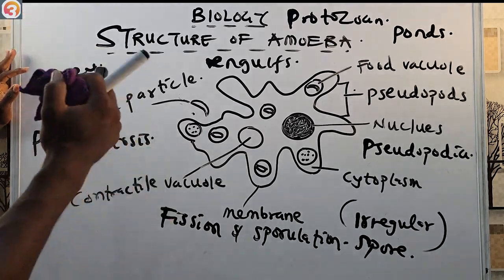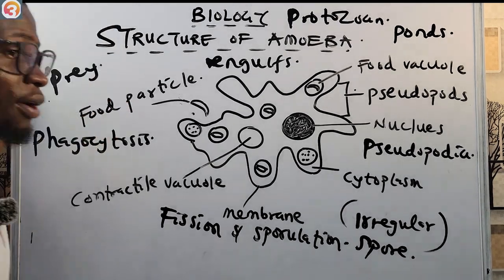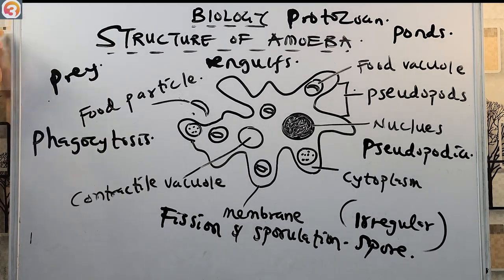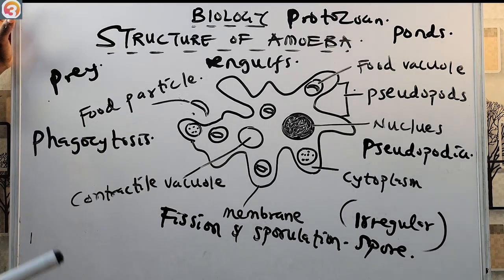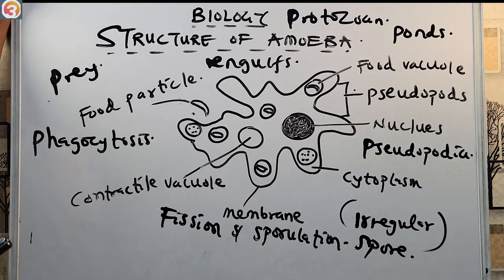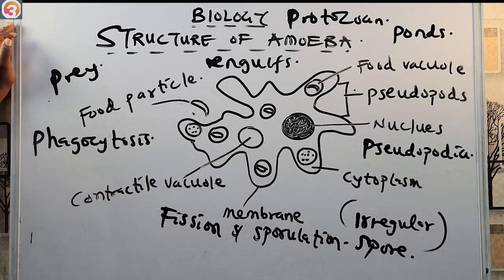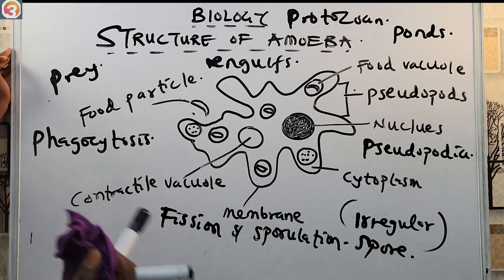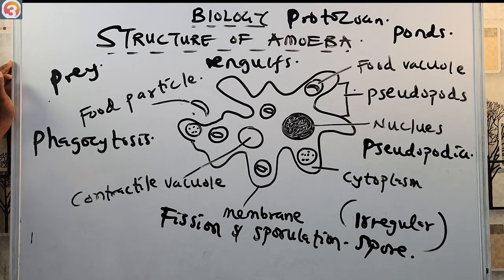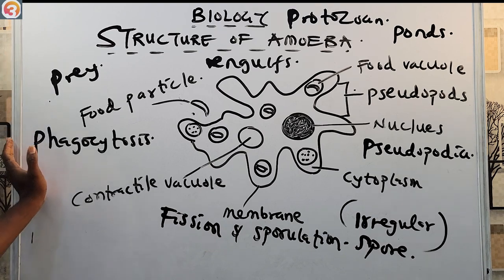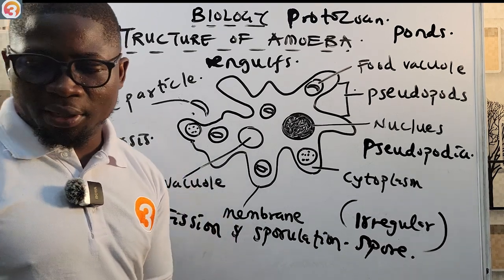To summarize: amoeba is a protozoan mostly found in ponds, it is unicellular, and it has an irregular shape. This is the structure of amoeba. Now we will take some questions to cement our understanding of this topic.